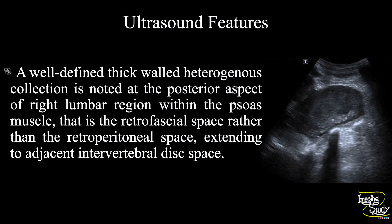In summary, a well-defined thick-walled heterogeneous collection is noted at the posterior aspect of the right lumbar region within the psoas muscle — that is the retrofascial space rather than the retroperitoneal space — extending to the adjacent intervertebral disc, which unfortunately I forgot to record. These features suggest a case of psoas muscle abscess.